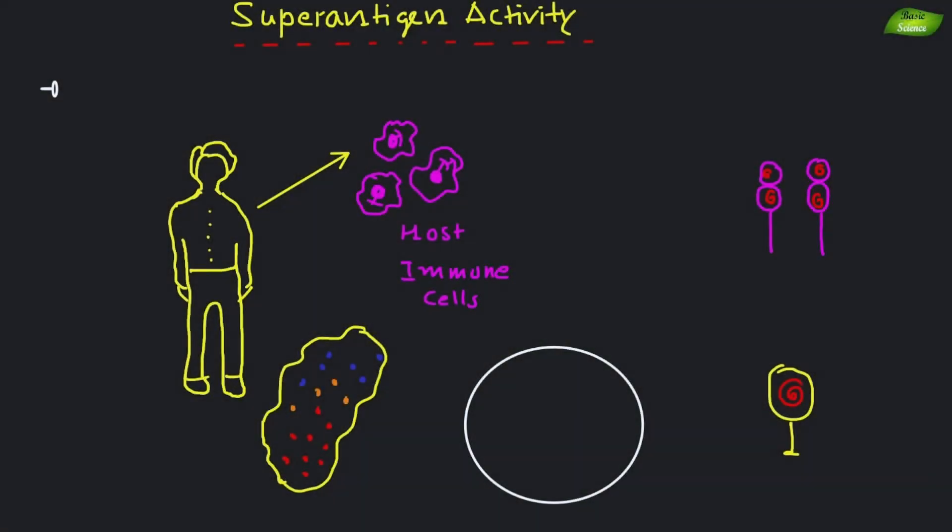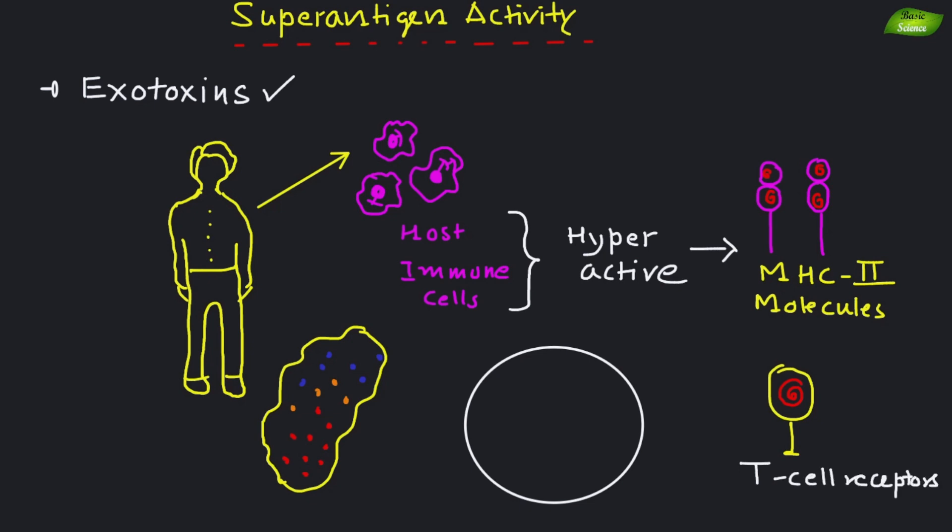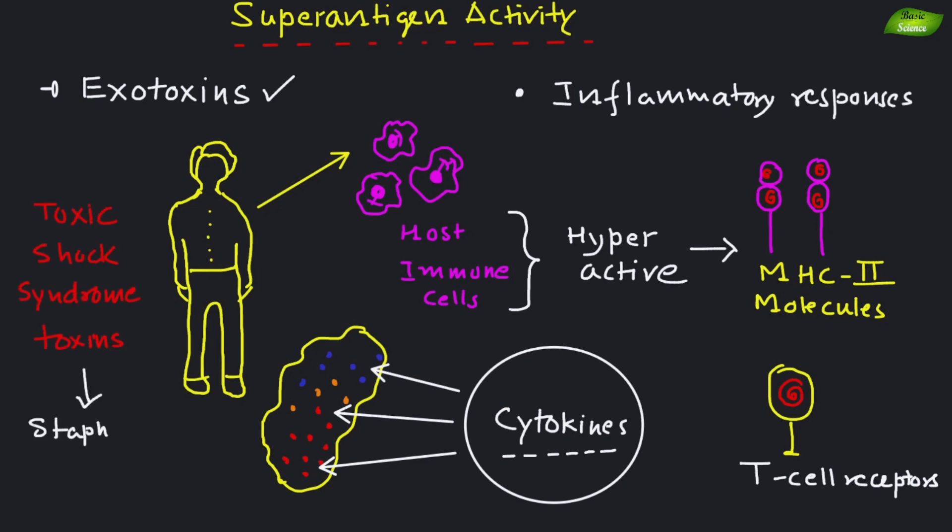The next mechanism is superantigen activity. Superantigens are a class of exotoxins that can hyperactivate the immune system by binding to MHC class II molecules and T cell receptors, leading to excessive cytokine release. This can result in severe inflammatory responses, as seen with toxic shock syndrome toxins produced by Staphylococcus aureus.